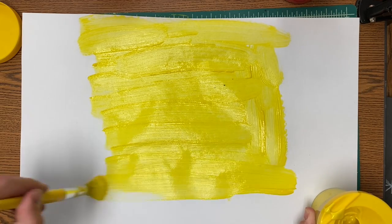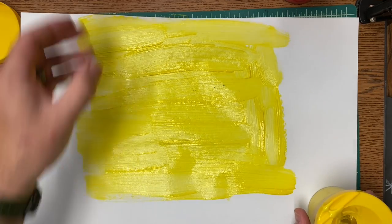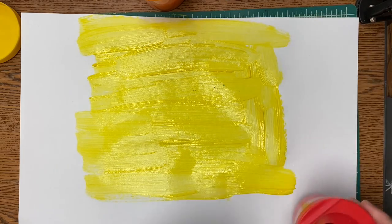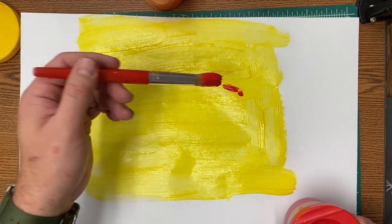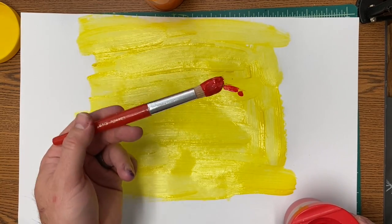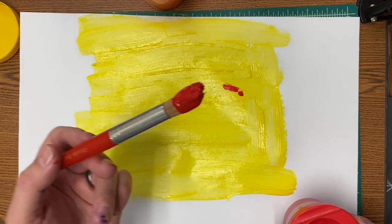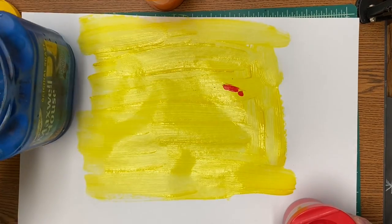Notice how I'm not leaving any white spots, but I'm also not adding too much paint in one area. I'm going to spread that paint around. Then you want to use just a little bit, just a touch of red, and mix it in there.